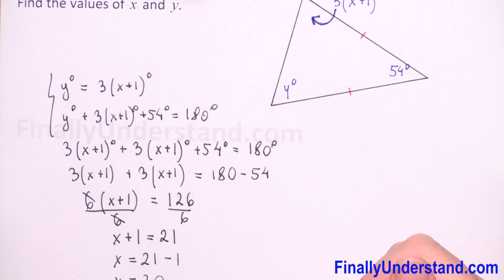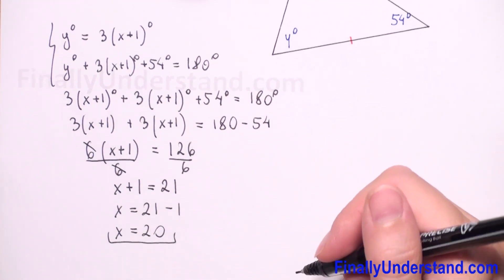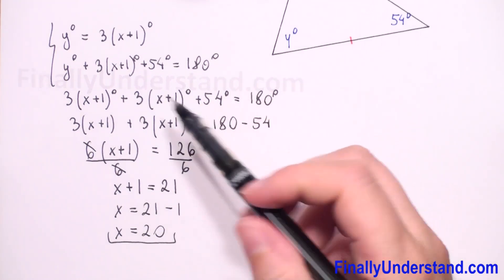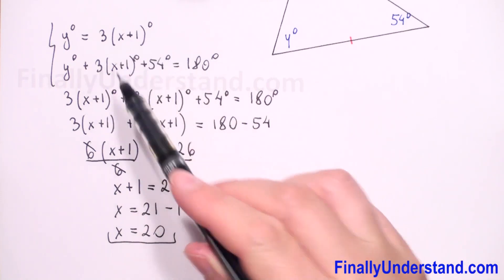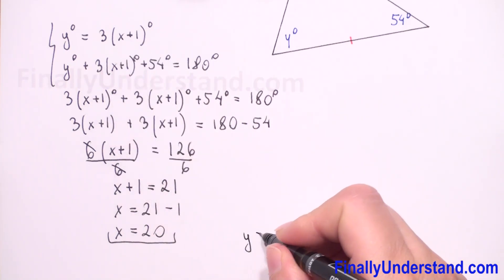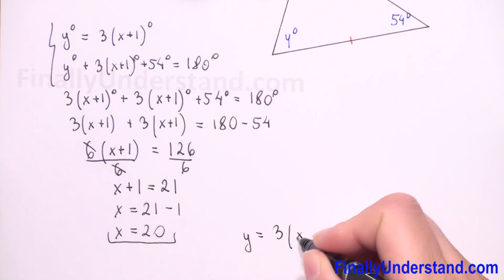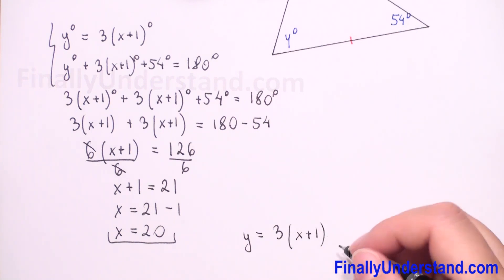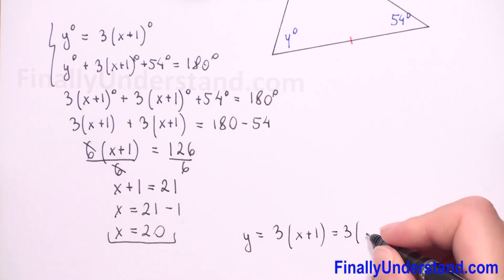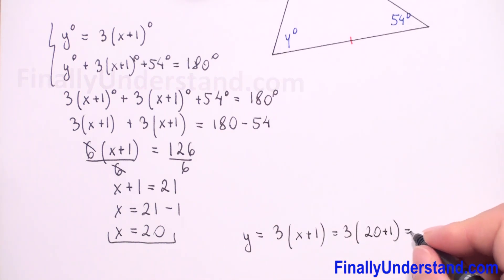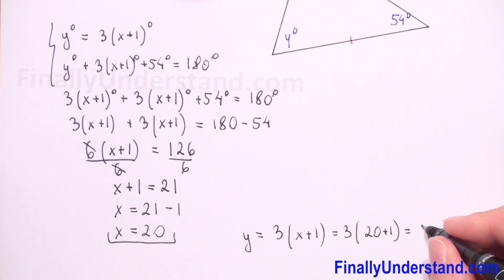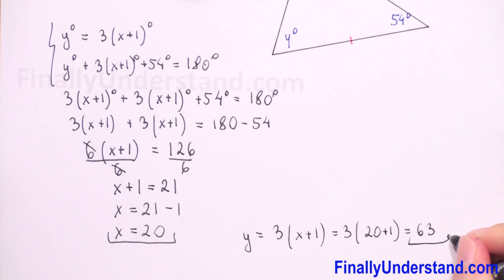Now we have to find y. Using the first equation and forgetting about degrees, we have y is equal to 3 times x plus one. Substituting x equals 20, we get 3 times 20 plus one, which is 3 times 21, which equals 63. So we found x equals 20 and y equals 63. This is the solution.